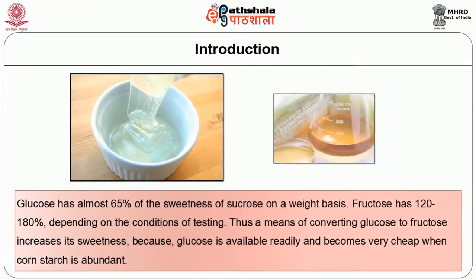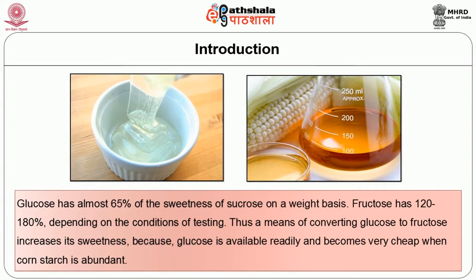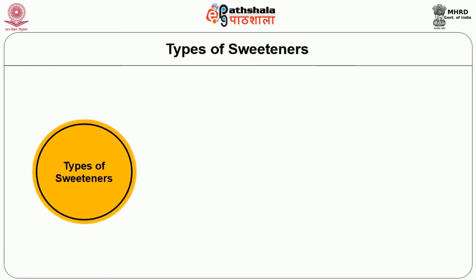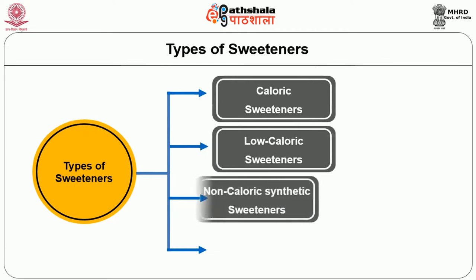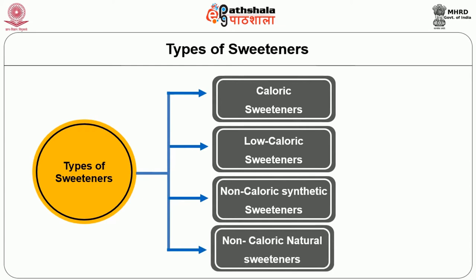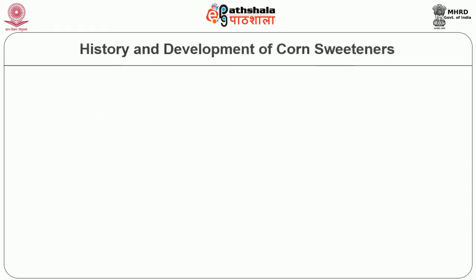Glucose has almost 65% of the sweetness of sucrose on a weight basis. Fructose has 120 to 180% depending on the conditions of testing. Thus, a means of converting glucose to fructose increases its sweetness because glucose is available readily and becomes very cheap when corn starch is abundant. Alkaline isomerization is possible but produces excessive colour and side products. As glucose is an isomer of fructose, sweeteners are categorized based on relative sweetness to sucrose — caloric sweeteners, low caloric sweeteners, non-caloric synthetic sweeteners and non-caloric natural sweeteners.